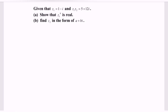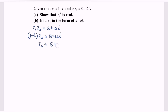For the second part, find z sub 2 in the form of a plus bi. Given that z sub 1 multiplied by z sub 2 is equal to 5 plus 12i, kindly substitute z sub 1. So (1 minus i) multiplied by z sub 2 equals 5 plus 12i. Divide both sides by (1 minus i), giving z sub 2 equals (5 plus 12i) over (1 minus i). To find z sub 2, we need to rationalize the denominator by multiplying by the conjugate, which is 1 plus i.